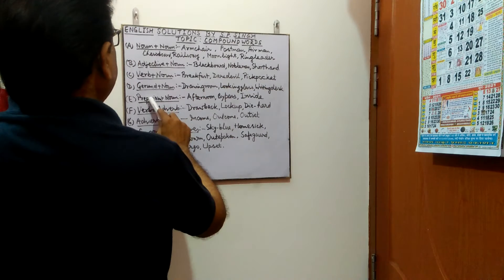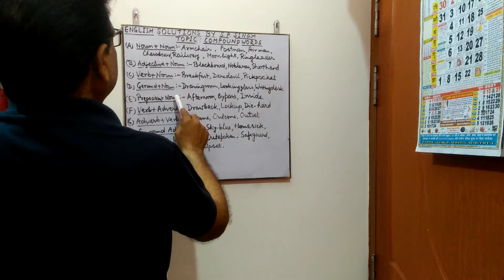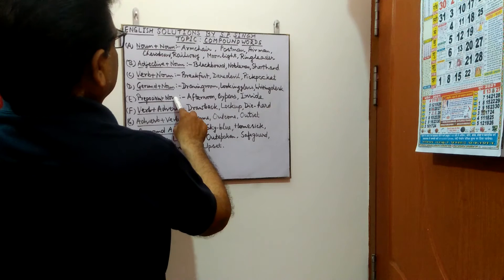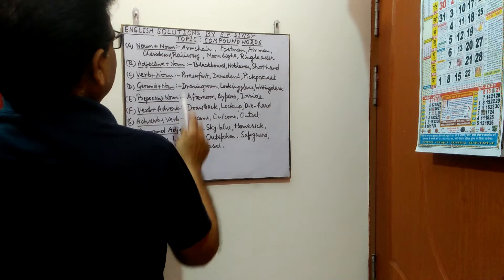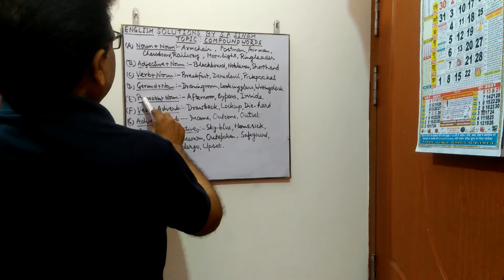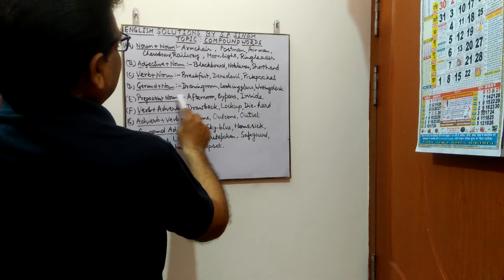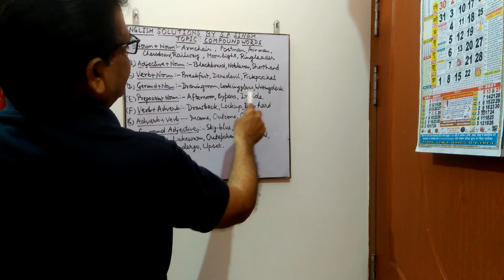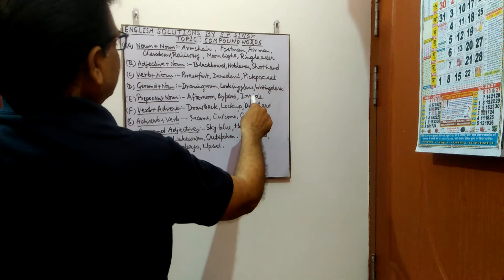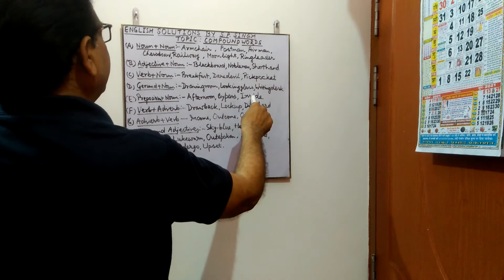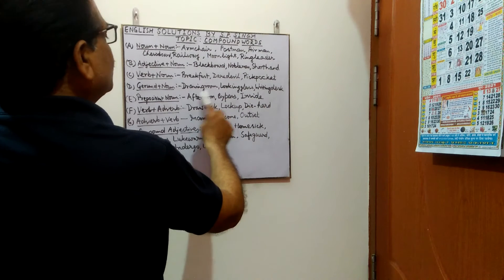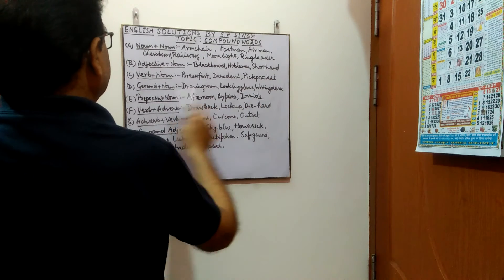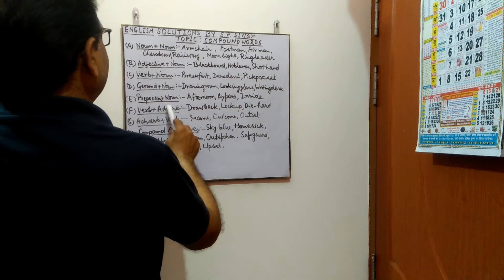The next category is preposition plus noun. These words are the combination of a preposition and a noun. Examples are: afternoon, bypass, and inside.